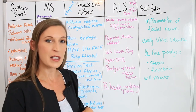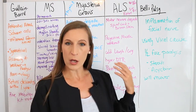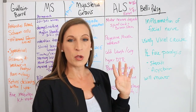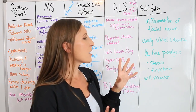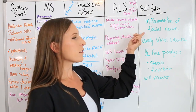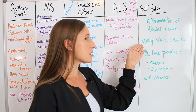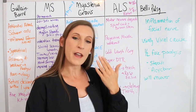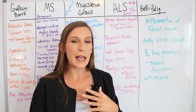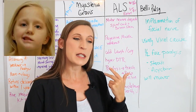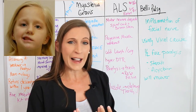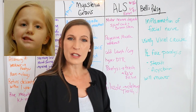Bell's palsy is not an autoimmune disease — it is usually caused by a viral illness. It involves inflammation of the facial nerve, and you will see half of the face is paralyzed. It is mentioned here because it can sound like a stroke or ptosis, but usually everything else with the patient is fine and they have no other symptoms.